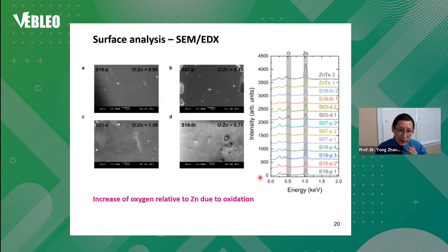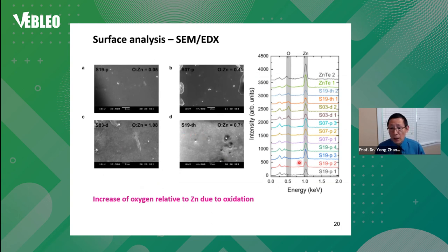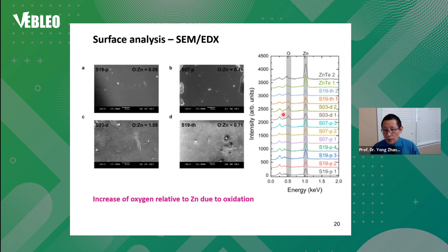We also did SEM and EDX analysis. On the surface, pristine samples tend to have a very clean surface, while degraded or thermally degraded ones tend to have a rougher surface. The EDX spectrum measuring relative components between zinc and oxygen shows very little oxygen peak for pristine samples, but more oxygen for degraded ones — confirming the surface has more oxygen due to natural degradation.